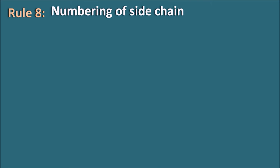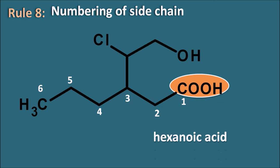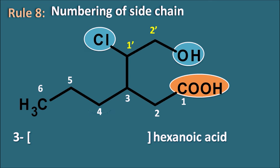Rule 8: numbering of the side chain. Example: carboxylic acid is the principal functional group; numbering 1, 2, 3, 4, 5, 6 gives a 6-carbon parent chain — hexanoic acid. It has a side chain at the third position; numbering for the side chain starts from the point of attachment: 1 and 2. The side chain has OH at position 2 and Cl at position 1, written as 1-chloro-2-hydroxy (using primed numbers 1' and 2' to differentiate). Numbering of a side chain always starts from the point of attachment, irrespective of where other groups are within the side chain.